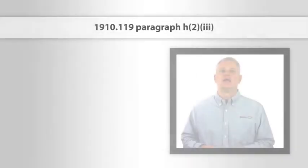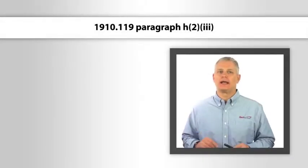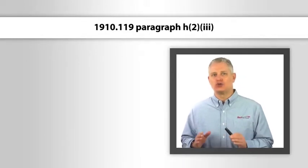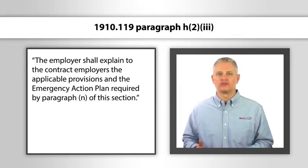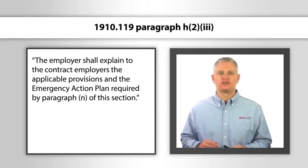Now under 1910.119 paragraph h2 triple i, the employer shall explain to contract employers the applicable provisions of the emergency action plan required by paragraph n of this section. In other words, if there's an emergency on that process, do you evacuate and seek refuge on site, do you go into the control room, or do you get away from the process? What's the proper evacuation during an emergency?